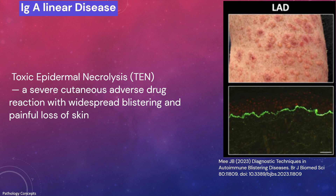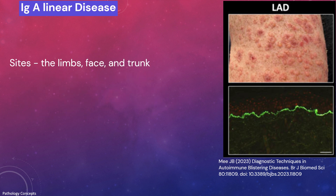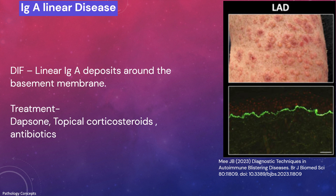Most common sites of IgA linear disease are limbs, face, and trunk. On H&E, a sub-epidermal blister is seen. On DIF, there are linear IgA deposits around the basement membrane zone. Management includes treatment with dapsone, topical corticosteroids, and antibiotics.